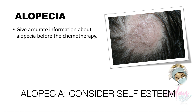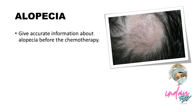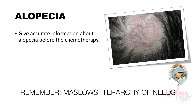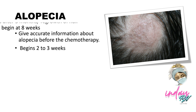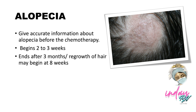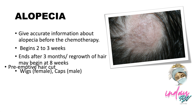The next side effect is alopecia, or loss of hair. We need to consider the self-esteem of the patient, so give information about alopecia before chemotherapy. Alopecia may begin 2 to 3 weeks into chemotherapy, and hair regrowth may begin at 8 weeks, ending after about 3 months. Female patients can use wigs, while male patients can use a cap. If the patient is already suffering from hair loss, they can do a preemptive haircut.